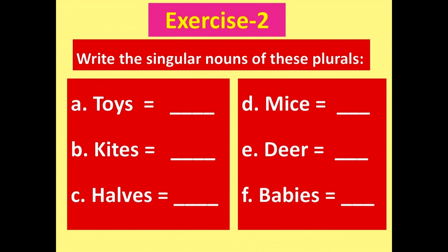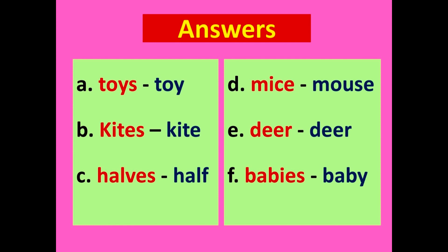Exercise 2: Write the singular nouns of these plurals. A. Toys → a toy. B. Kites → a kite. C. Halves → half. D. Mice → mouse. E. Deer → deer. F. Babies → baby.